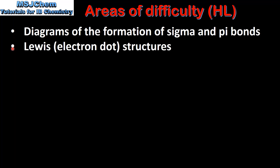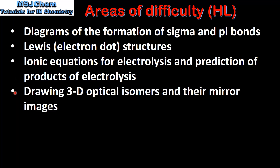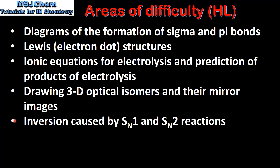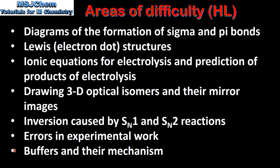Drawing Lewis or electron dot structures, ionic equations for electrolysis and prediction of products of electrolysis, drawing 3D optical isomers and their mirror images, inversion caused by SN1 and SN2 reactions, errors in experimental work, and finally buffers and their mechanism.